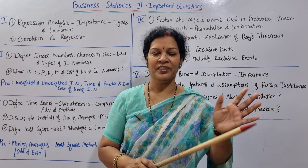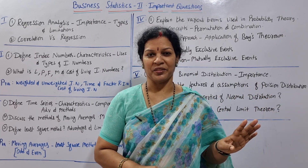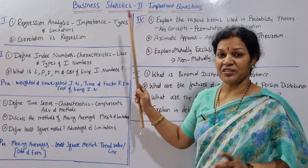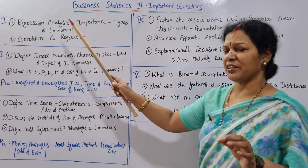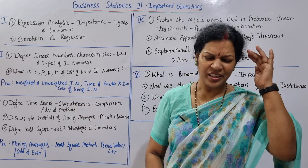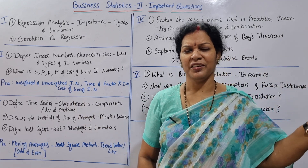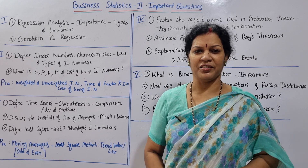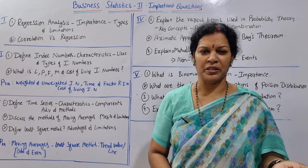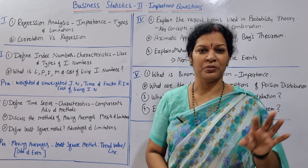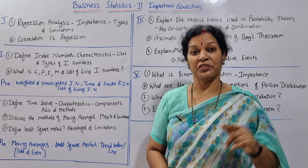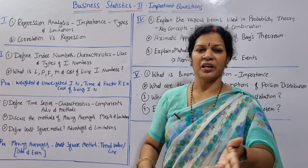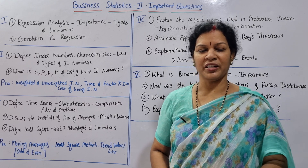These important questions are complete — a playlist is ready. Let's discuss the first unit of Business Statistics: Regression Analysis. It's quite easy. Regression analysis has two equations — X on Y and Y on X. These regression equations are easy, just like correlation. In Statistics Unit 1, the same types of equations apply.